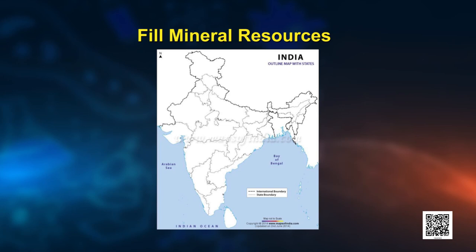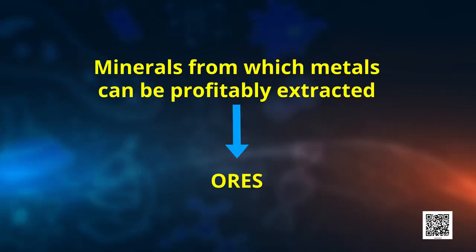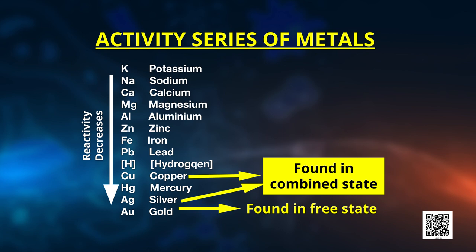India is gifted with mineral resources. At some places, minerals contain a very high percentage of a particular metal and the metal can be profitably extracted from it. So these minerals are called ores. Remember the word ores. The metals at the bottom of the activity series are least reactive. These metals are found in the earth's crust in free state in nature. These are noble metals — gold, silver and platinum — and remember that is why they are expensive.